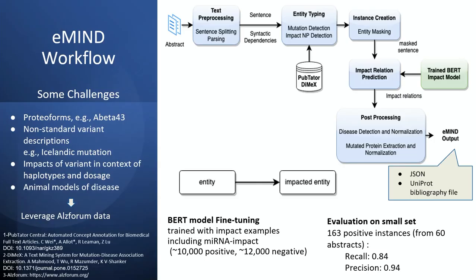We evaluated the model on a small dataset specific to Alzheimer's disease and had good performance, so we decided this is a good approach. Some challenges we encountered are that PapTator is not yet able to capture proteoforms in the context of Alzheimer's — for example, A-beta-43 or other proteoforms. Also, non-standard variants like Icelandic variants cannot be captured, nor can variants in the context of haplotypes, gene dosage, animal models, or indices. For these cases, we leverage forum data very specific to Alzheimer's disease.